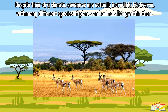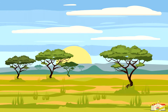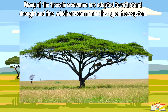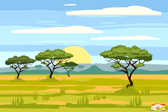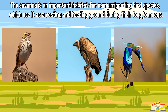Despite their dry climate, savannahs are actually incredibly biodiverse, with many different species of plants and animals living within them. Many of the trees in a savannah are adapted to withstand drought and fire, which are common in this type of ecosystem.